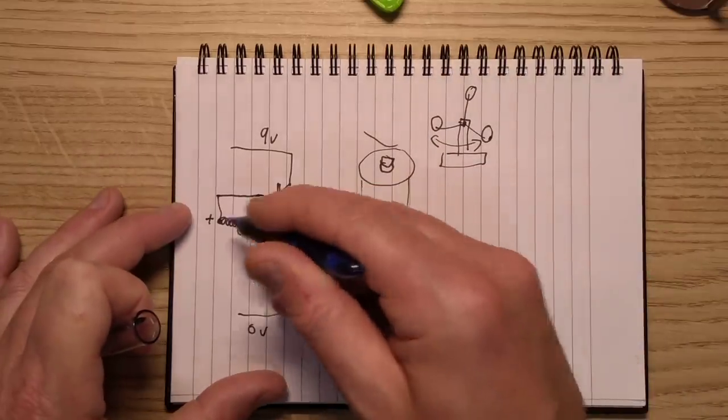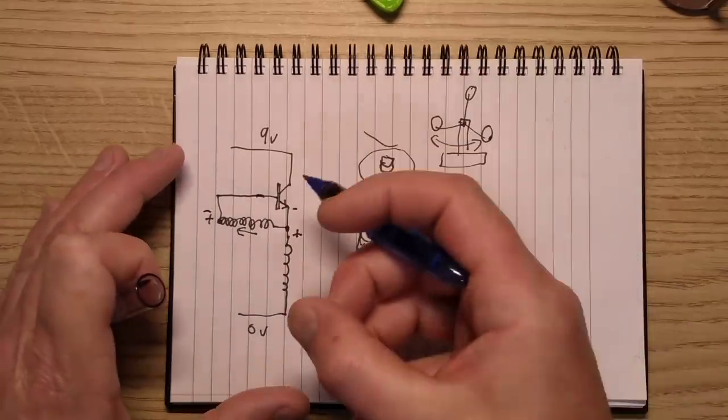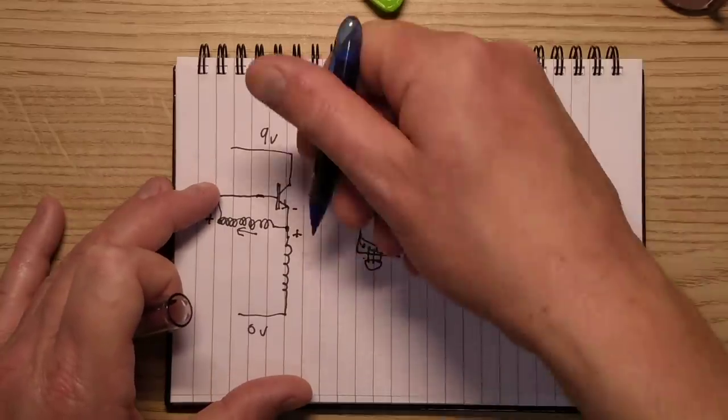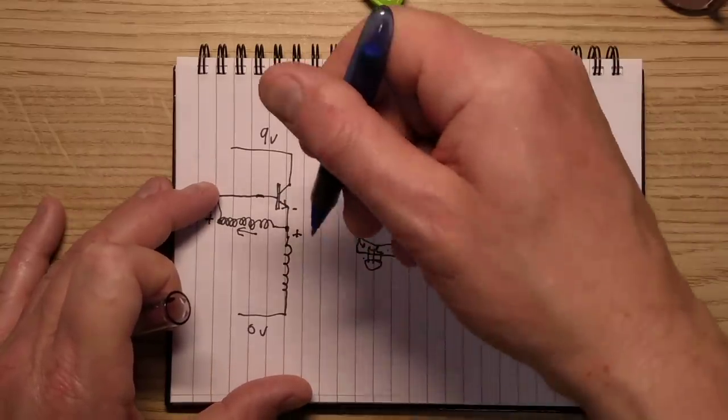And when it did start turning off, this end would go negative and it'd shut off decisively. So the net result of that was that as the pendulum swung past it, it would give it a hard kick.